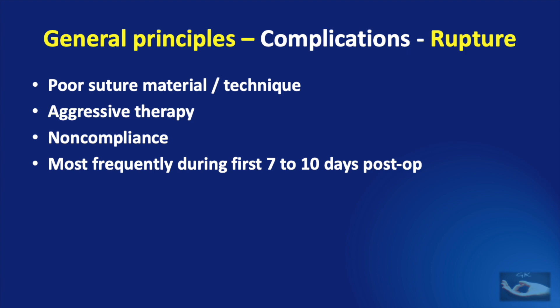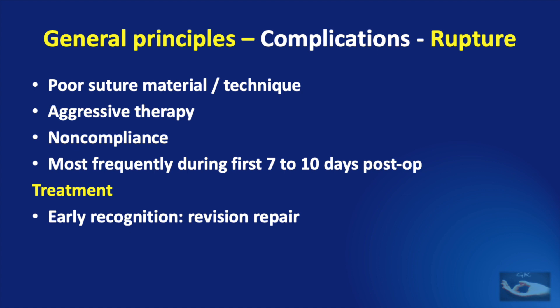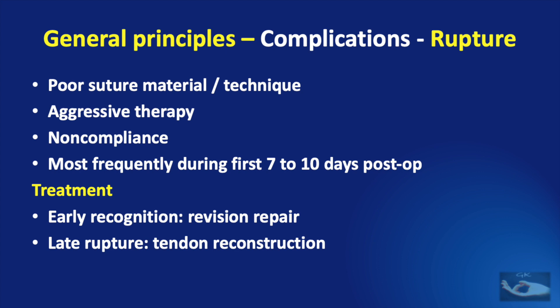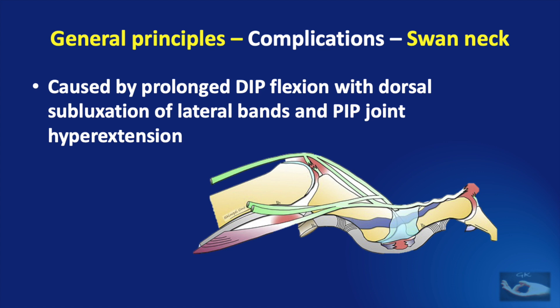The treatment for rupture depends on whether recognition occurred early or late. If early, a revision repair can be done; if late, a tendon reconstruction is needed. Swan neck deformity can occur following a mallet finger injury, caused by prolonged DIP joint flexion with dorsal subluxation of the lateral bands leading to PIP joint hyperextension. The boutonniere deformity is caused by central slip disruption — a neglected zone 3 injury — with lateral band volar subluxation leading to flexion at the PIP joint and hyperextension at the DIP joint.